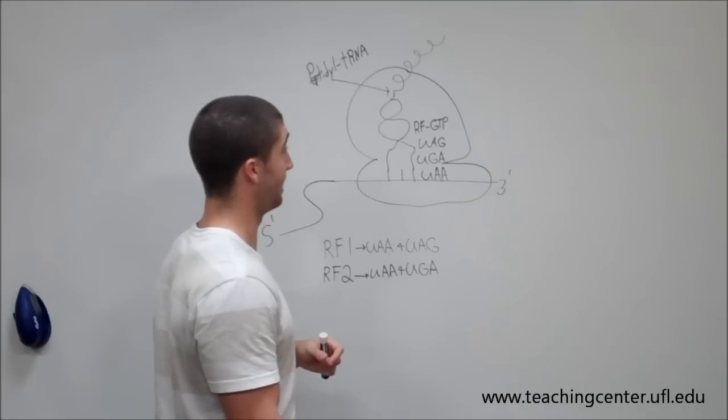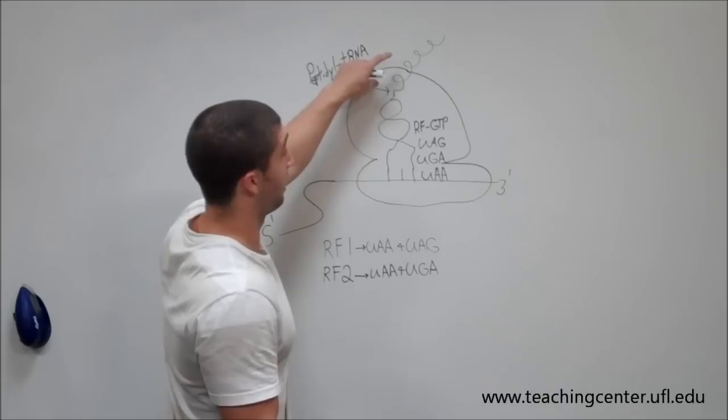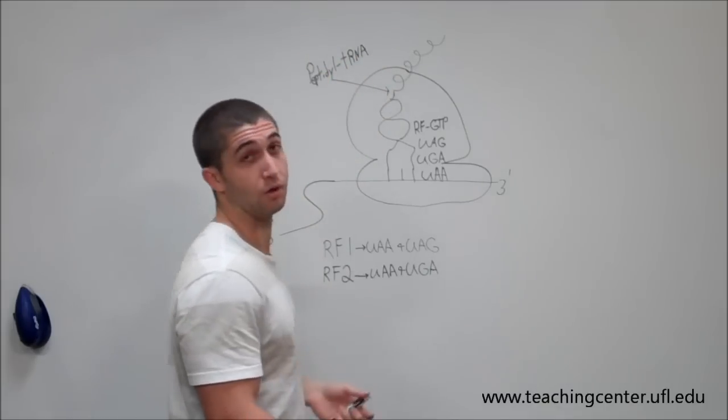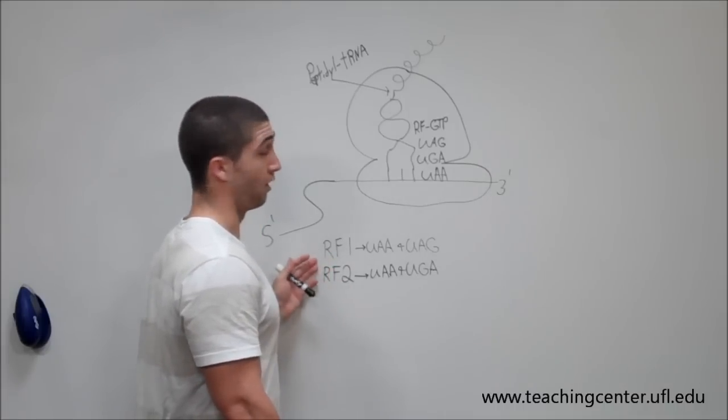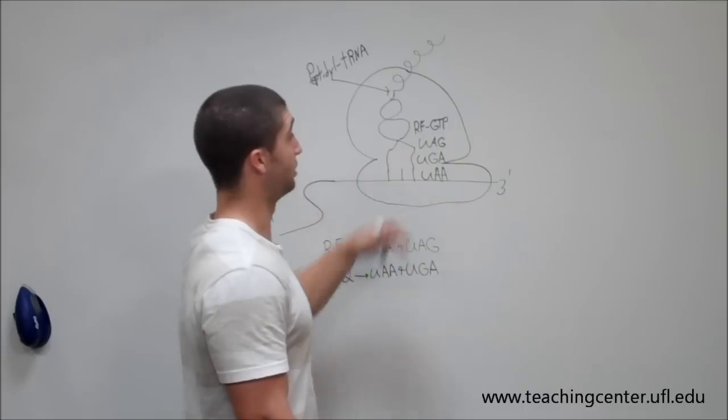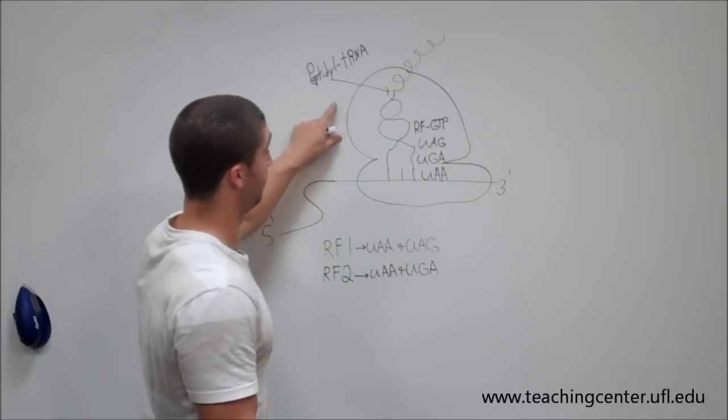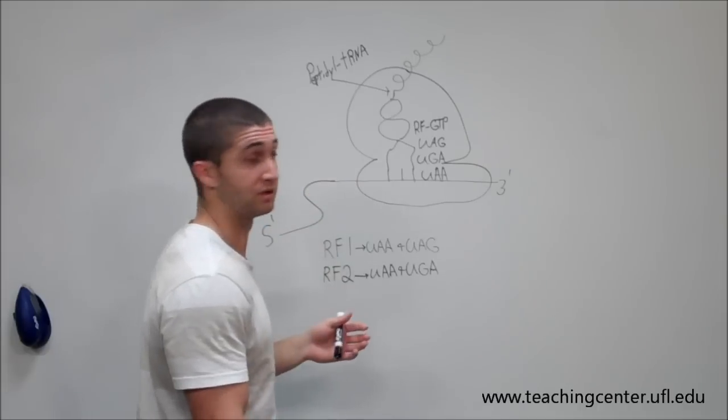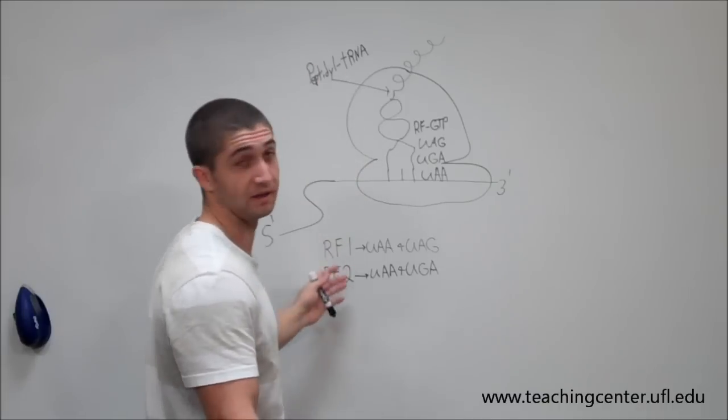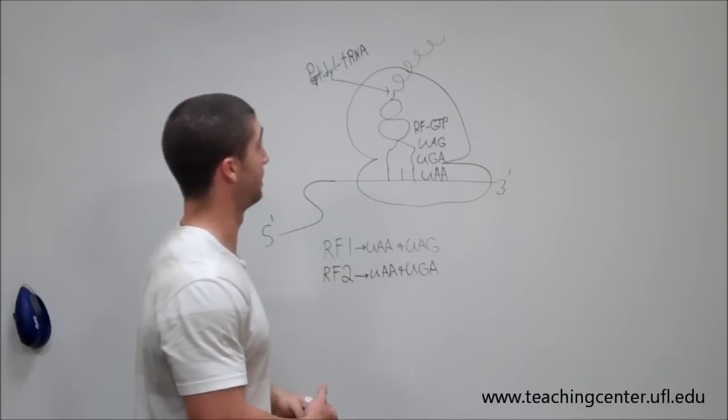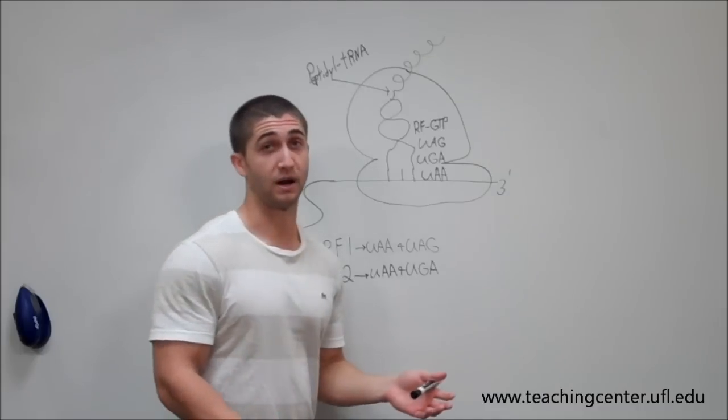What basically happens next is once your newly formed polypeptide gets released, you'll have release factor three which is going to help facilitate the release of RF1 and RF2, GTP will be hydrolyzed, you'll get dissociation of your 50S and your 30S ribosomal subunits, your mRNA will leave, your tRNA will leave, everything dissociates and that's how termination happens in prokaryotes.